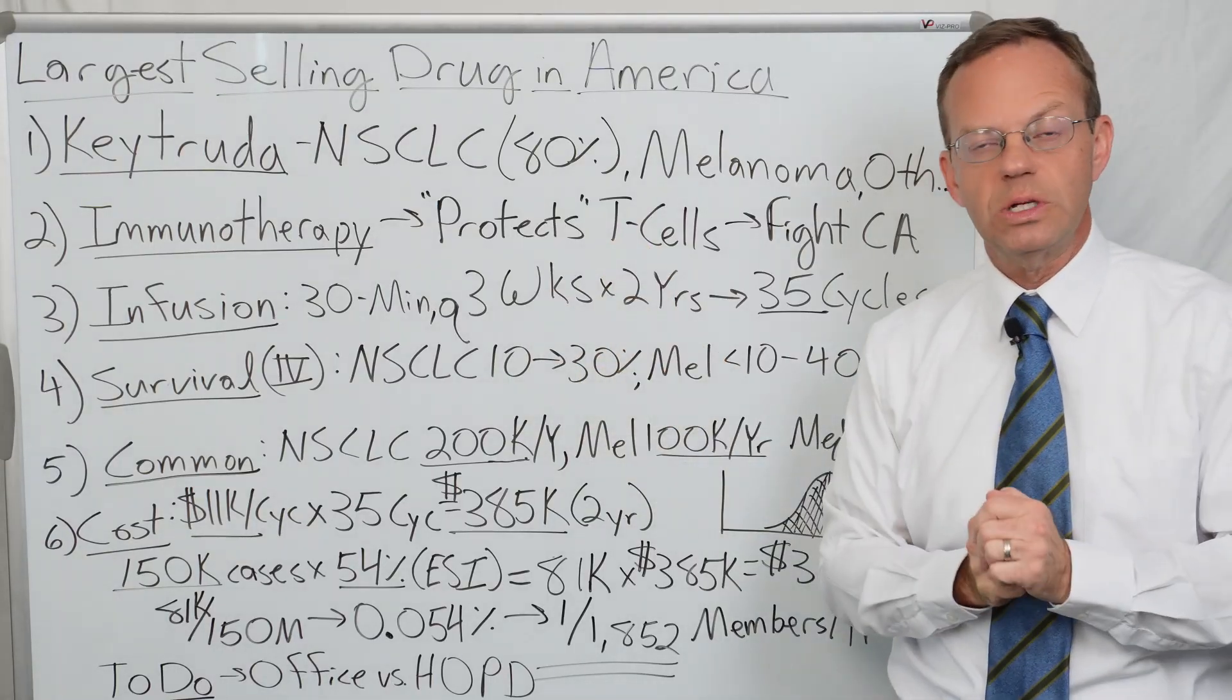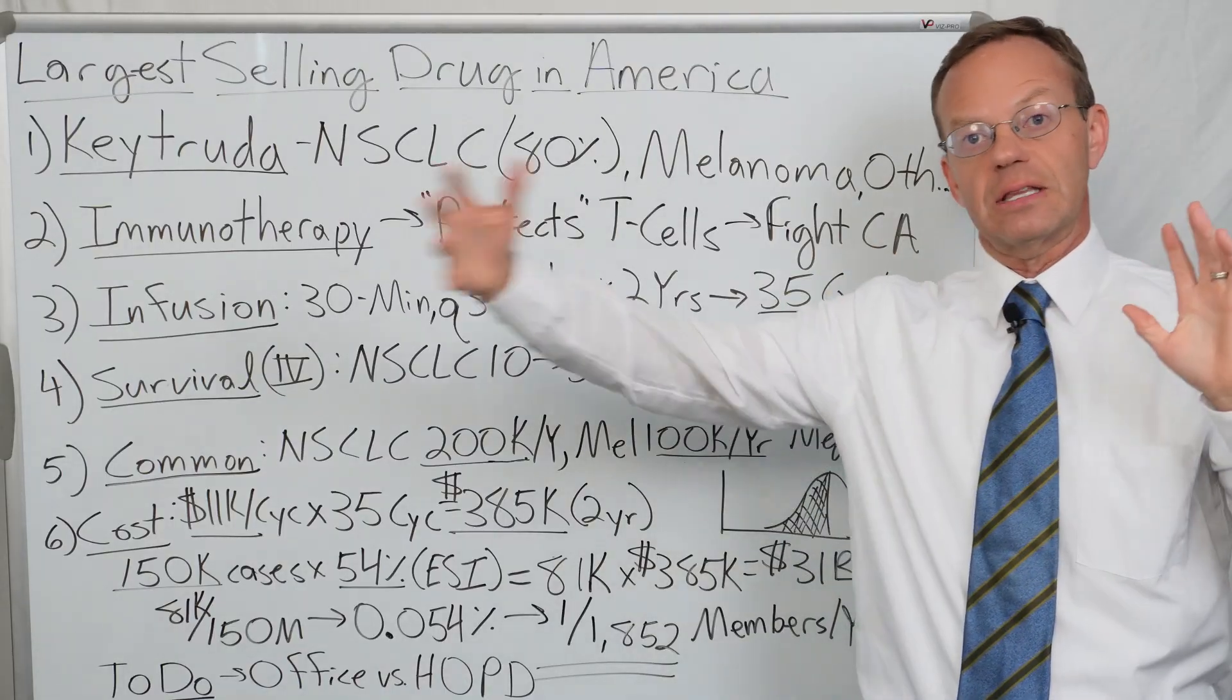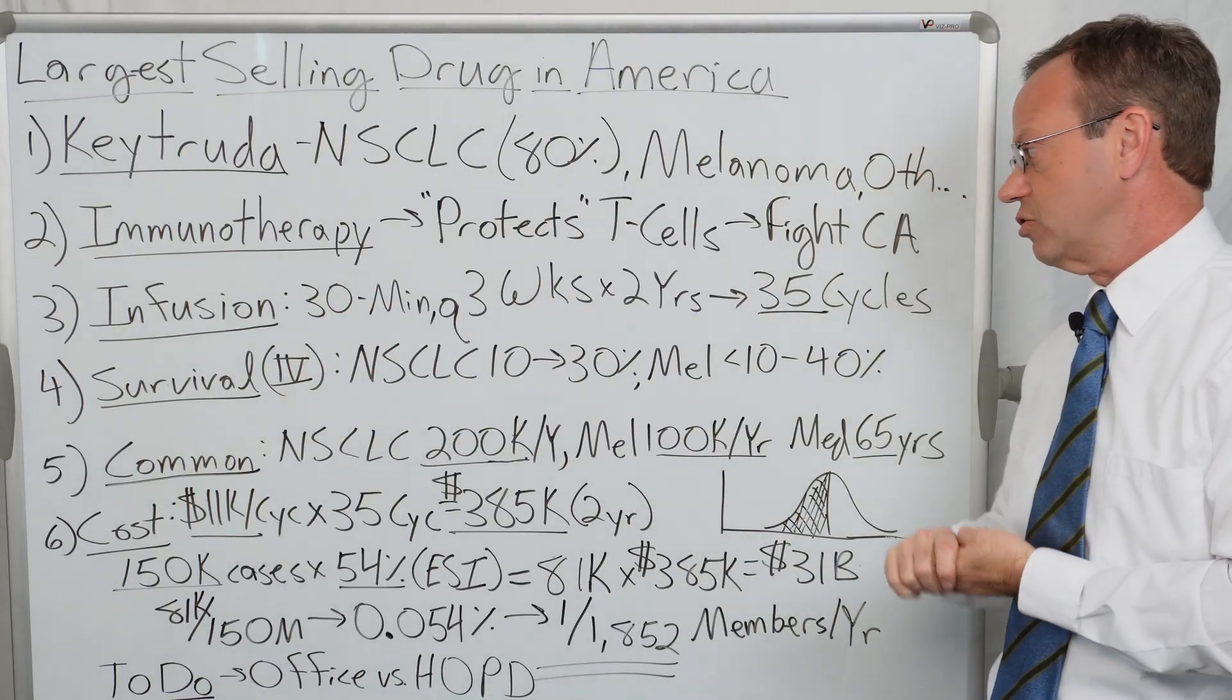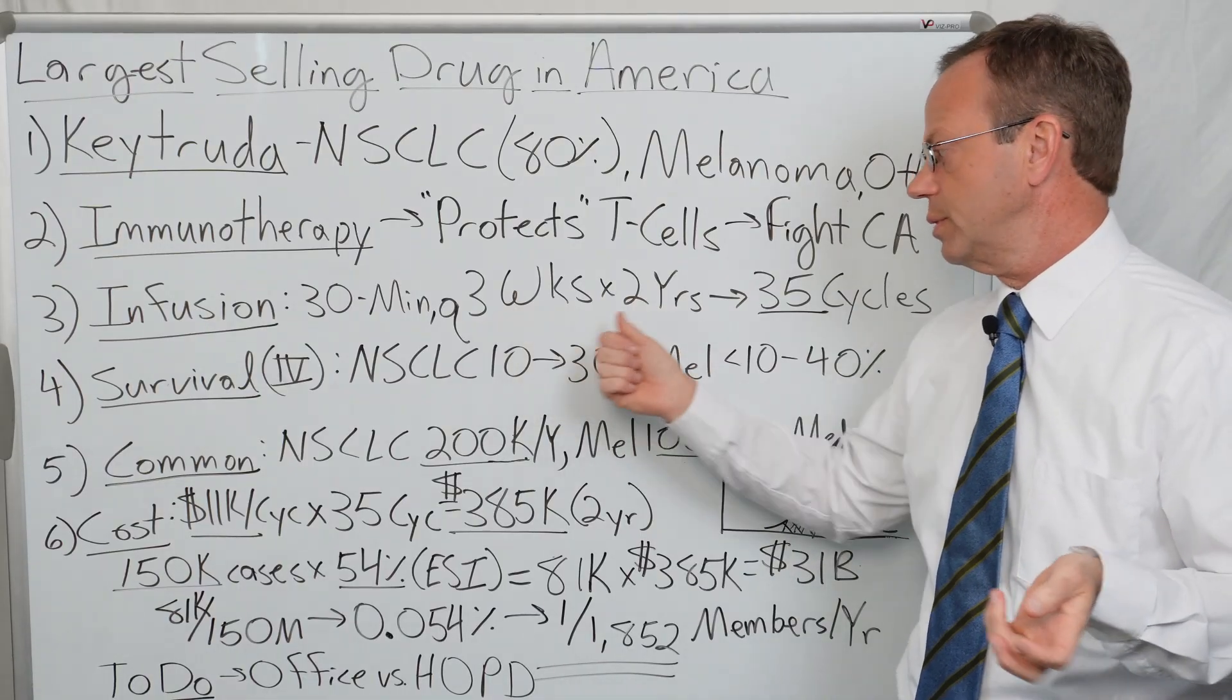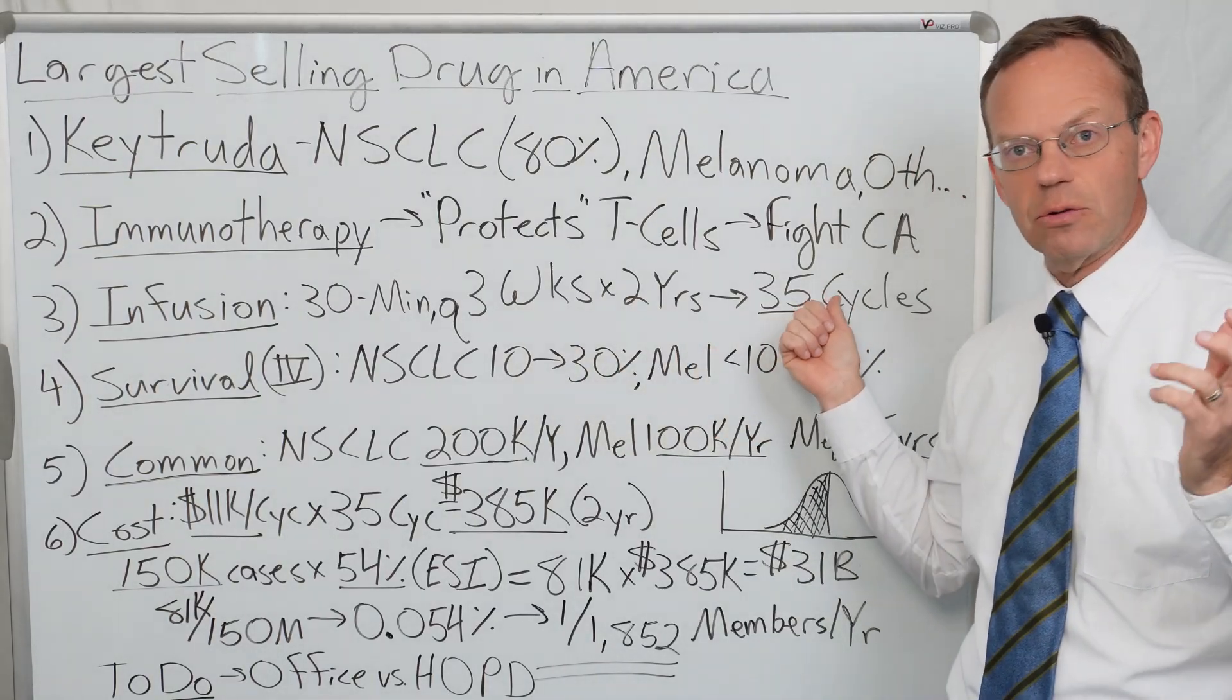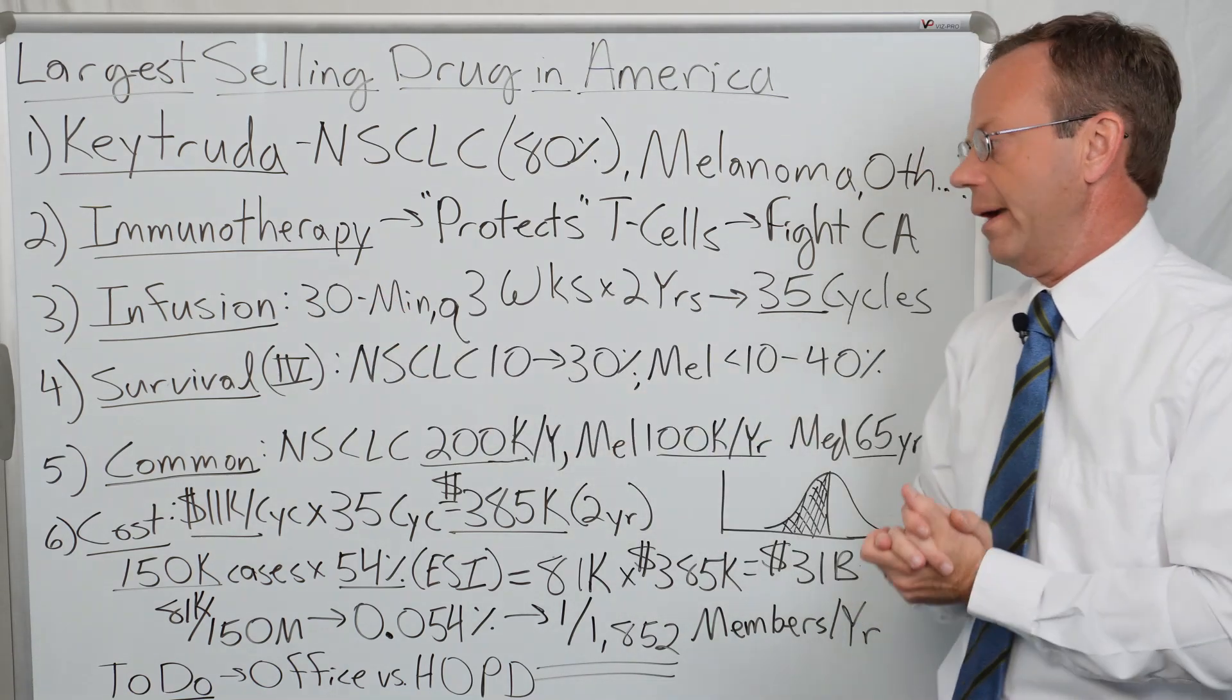It's got to be effective, actually working, and the person has to be able to tolerate the longer term side effects of Keytruda. People might take it for upwards of two years. If you do it every three weeks for two years, that's 35 cycles or doses of Keytruda that the person's taking.